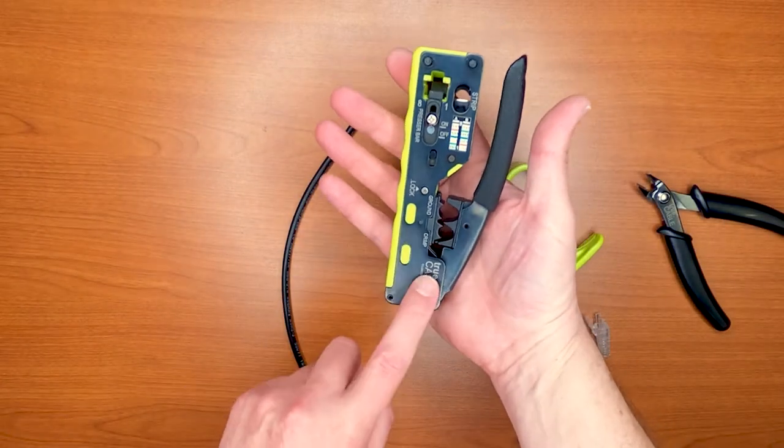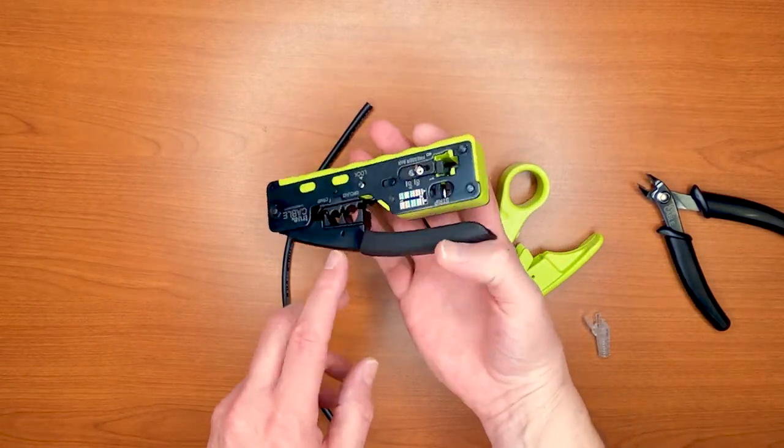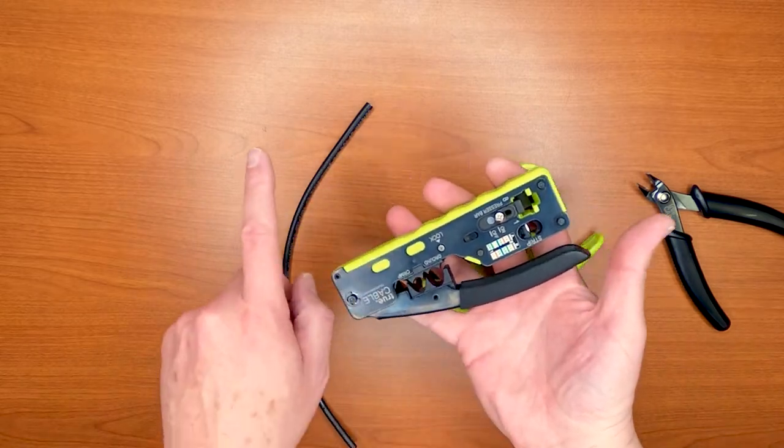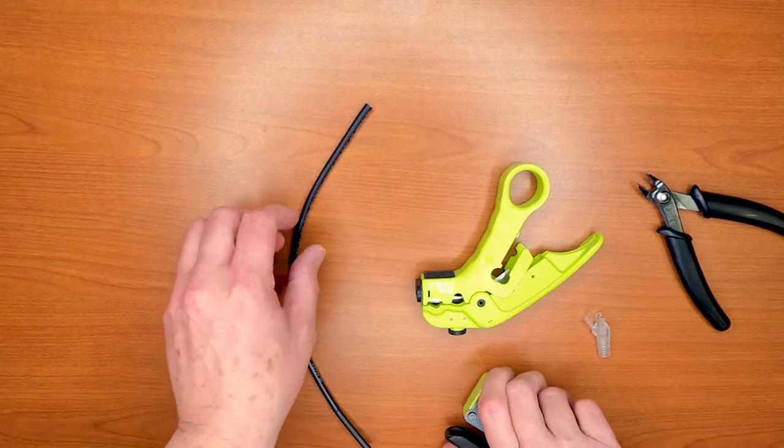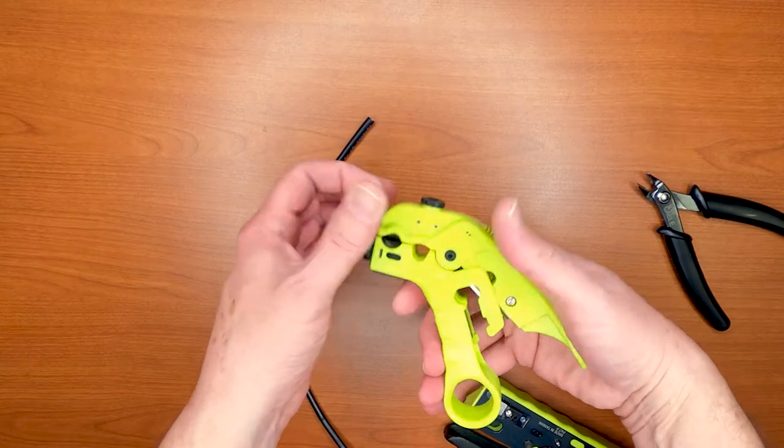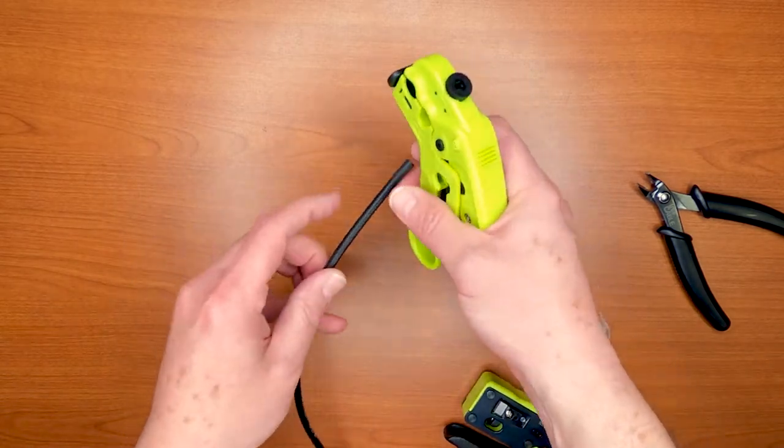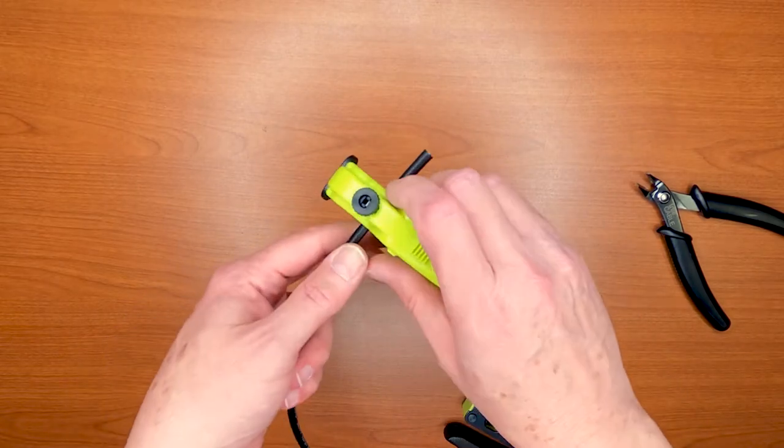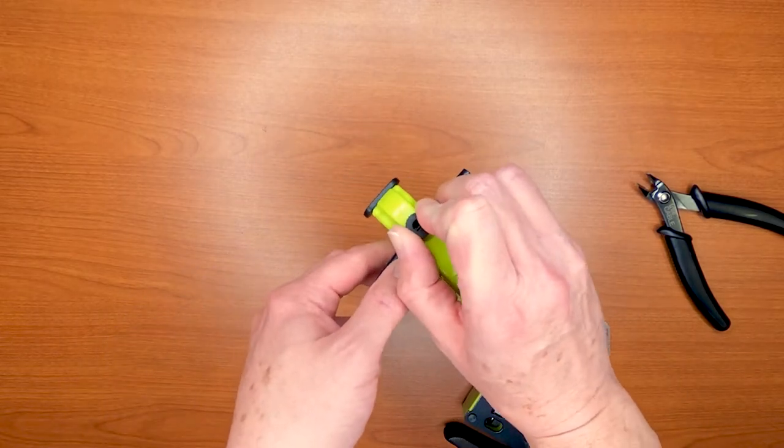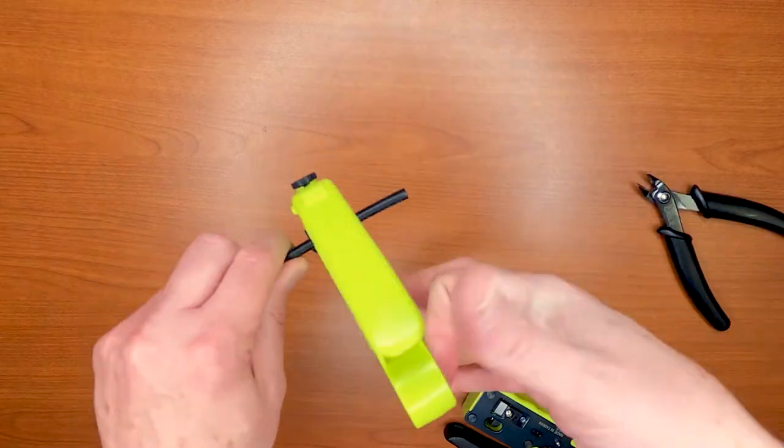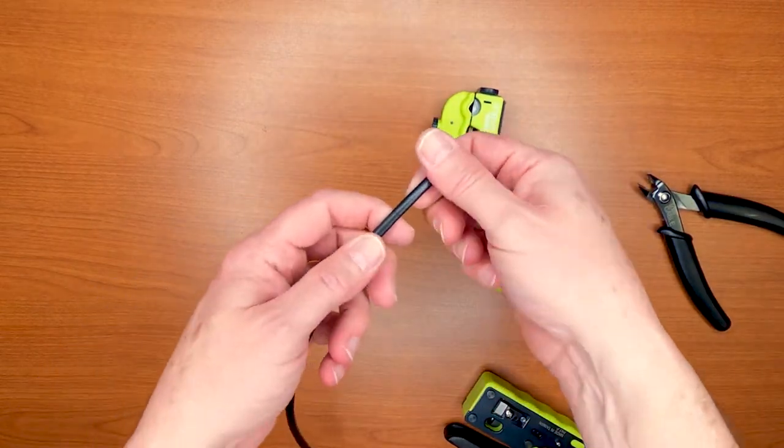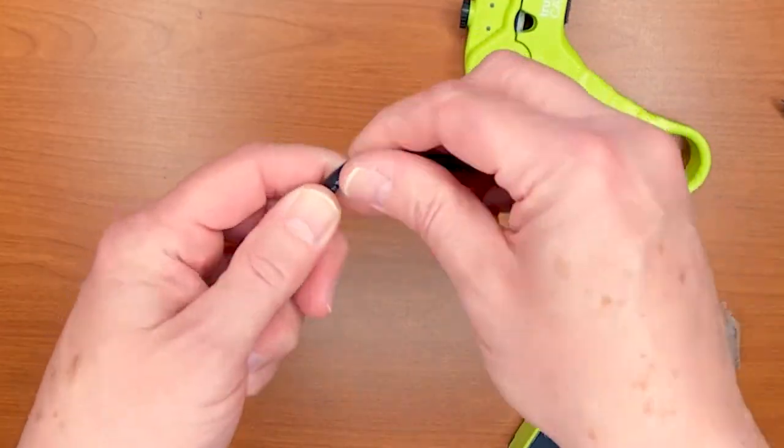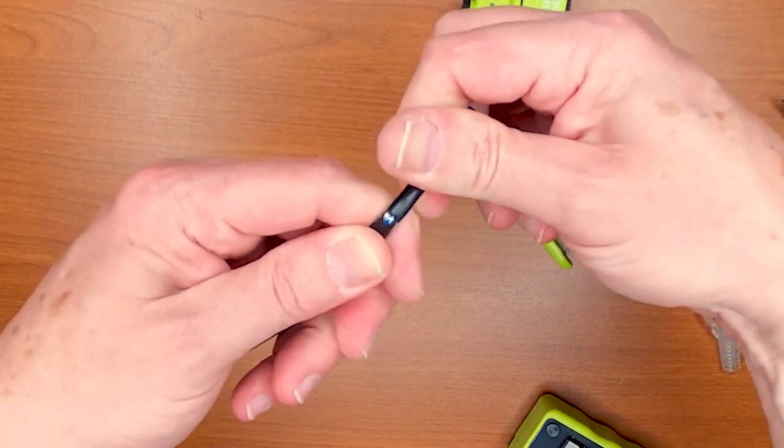Well, our all-in-one crimp and termination tool does not handle this particular cable very well. What you have to do is resort to our cut and strip tool, which works very, very well. Just go ahead and put the cable in there, lower the blade until it makes good, firm contact, turn it around once, take it off, and you should have a nice score on there. And there it is.